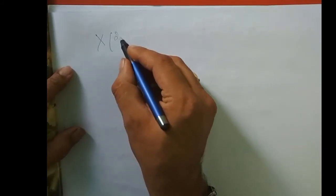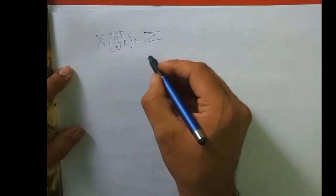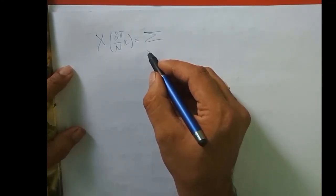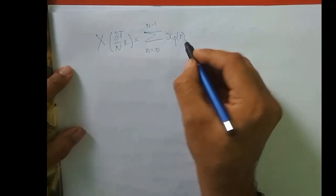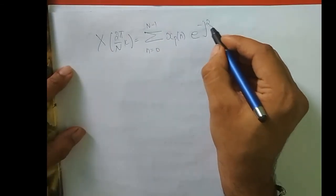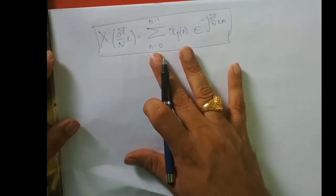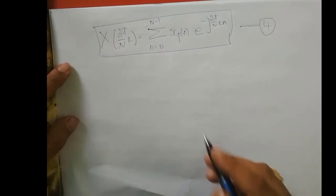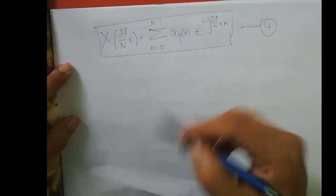So I can write: x of 2 pi by N into k equals summation n from 0 to N minus 1 of xp of n e power minus j 2 pi by N into k n. We call this equation 4. We still have more to derive — we will do it in the next lecture.